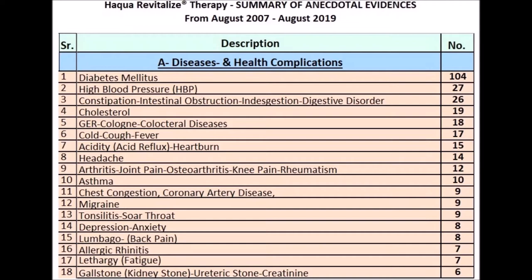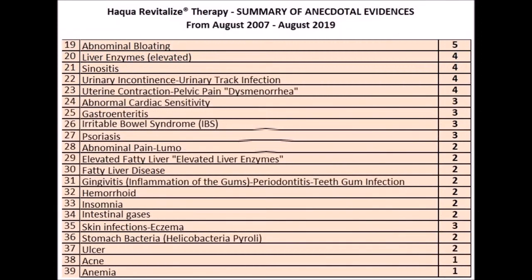12. Migraine: 13 people. 13. Tonsillitis, sore throat: 9 people. 14. Depression, anxiety: 8 people. 15. Lumbago or low back pain: 8 people. 16. Allergic rhinitis: 7 people. 17. Lethargy or fatigue: 7 people. 18. Gallstone, kidney stone, ureteric stone, creatinine: 6 people.